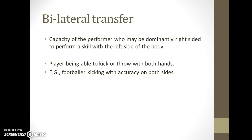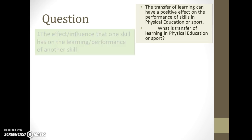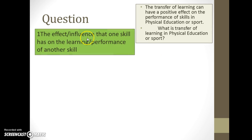Let's look at some questions. This first one: transfer of learning has a positive effect on the performance of a skill — so what is transfer of learning in physical education or sport? It's a very low-level question. The answer is: it's the effect or influence that one skill has on the learning and performance of another skill.